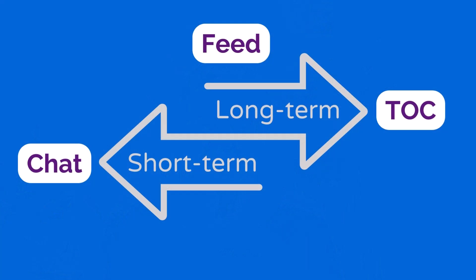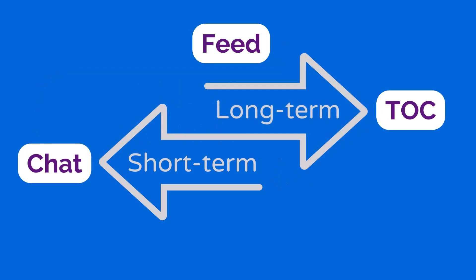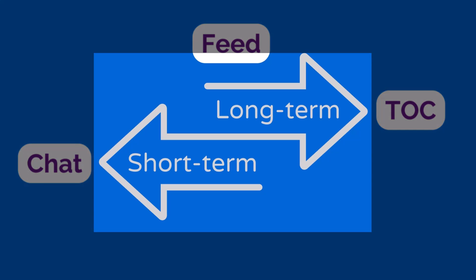There are qualities of a chat room and an activity feed that are very different from each other. I'm also going to bring in the table of contents — abbreviated as TOC — because it's at another extreme from the chat room. One of the key differences across a chat room, a feed, and a table of contents is how long your members are going to want to interact with the material that's being shared.